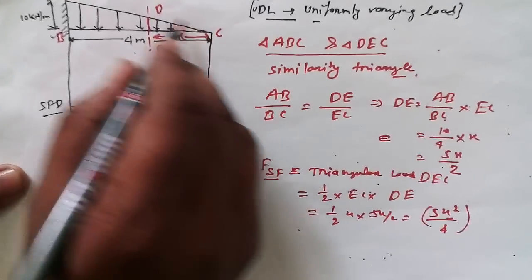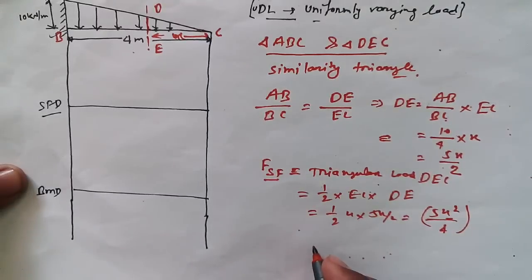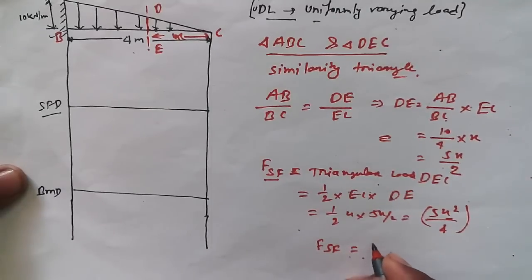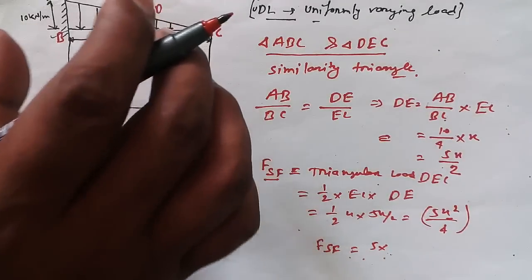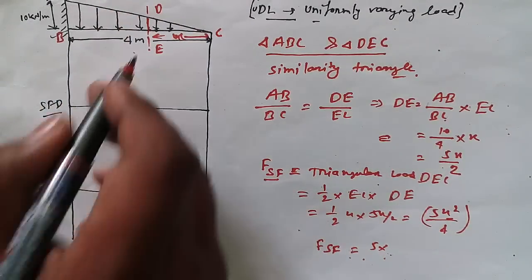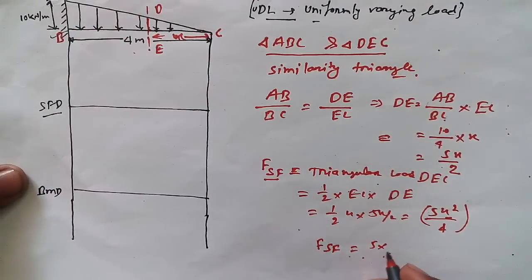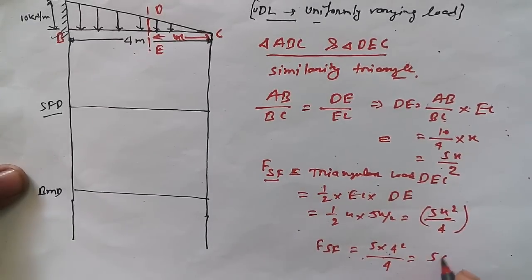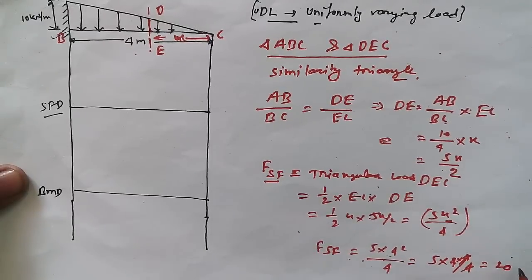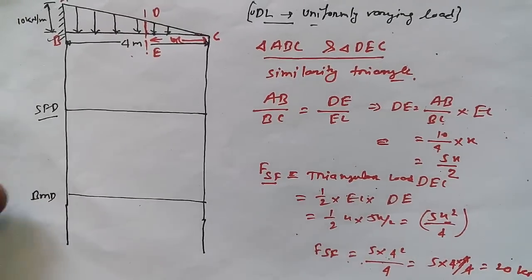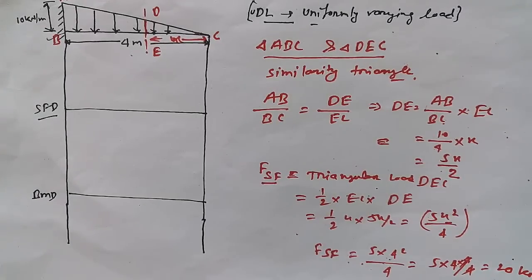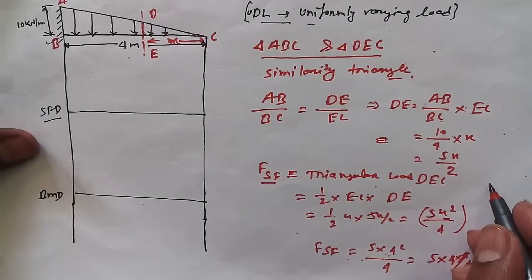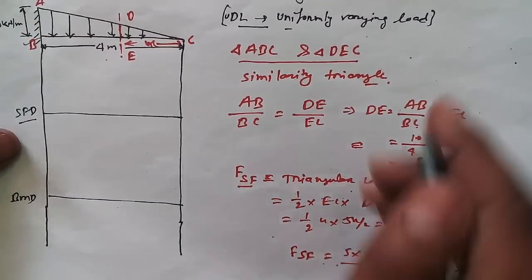Now from this we can easily find out the total shear force. We need to put X equal to 4, because we are finding the total shear force from C to B. So SF = 5 × 4² / 4, that means 5 × 4 × 4 / 4, the 4s cancel, giving us 20 kilonewtons. We are going to get a shear force of 20 kilonewtons.